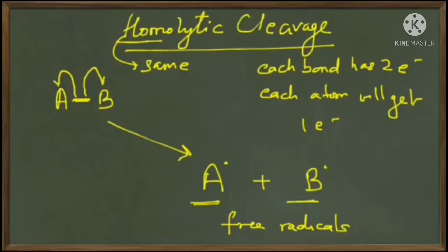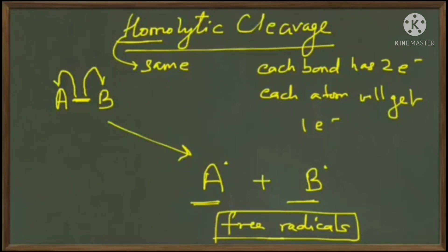These species are called free radicals. So homolytic cleavage leads to free radicals. Free radicals are species which have an odd number of electrons.